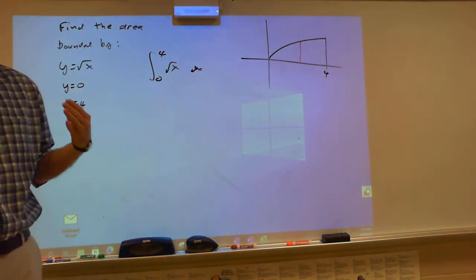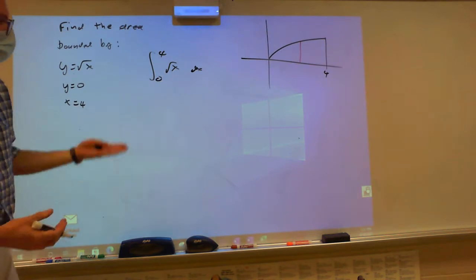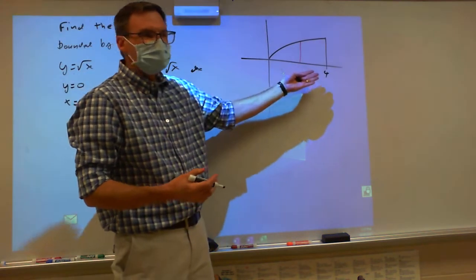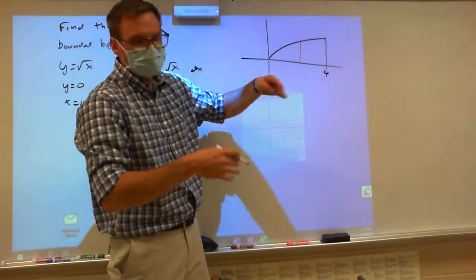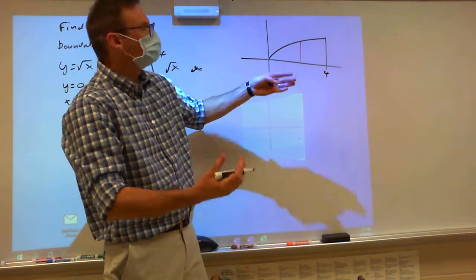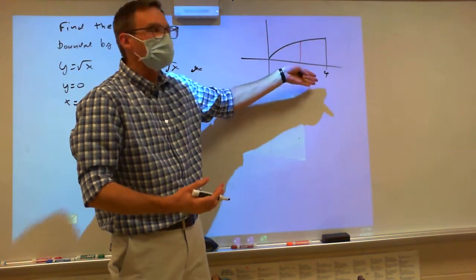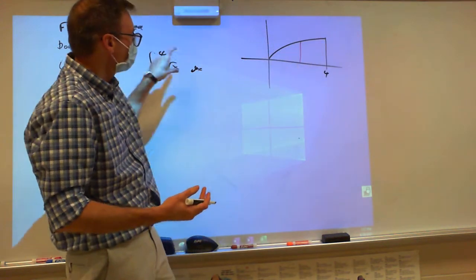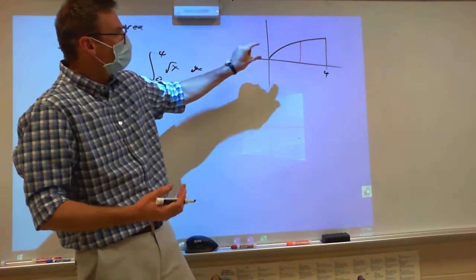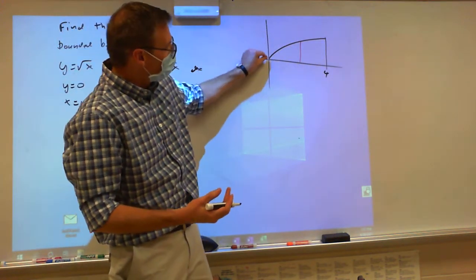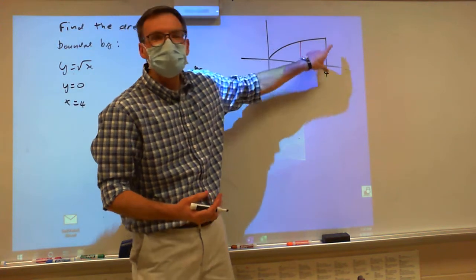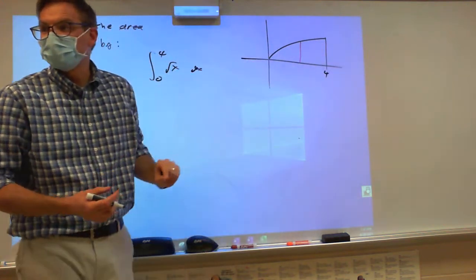So how you find the area: you draw a region, they give you information to draw, you draw your rectangle, you focus on the rectangle, you figure out how tall the rectangle is. Then you figure out where can that rectangle move, and you set it up.